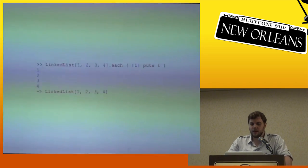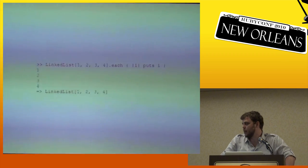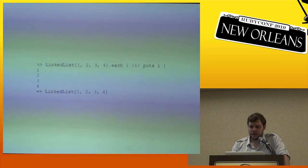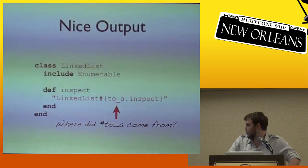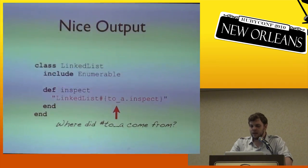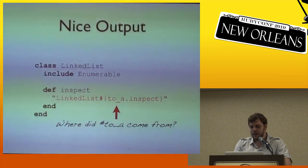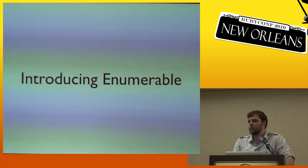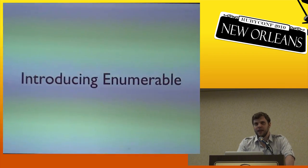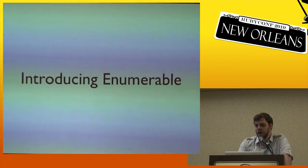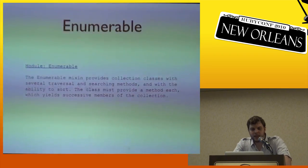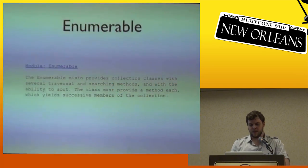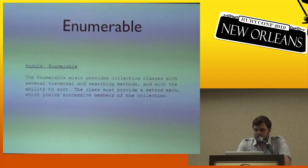We can use that to demonstrate the behavior of each — a linked list of integers 1 through 4, and for each item in the list it prints out the item. Looking at the inspect, where did `to_a` come from? We didn't define it. The answer is that it's inside Enumerable. If we include Enumerable, that gives us `to_a` and we can use that in our inspect.